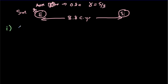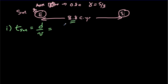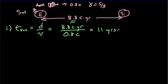Question I is to find out how much time passes between those two events for Sue. Well, that time is going to equal the distance she sees divided by the relative speed between the two. The distance here is 8.8 light years, the relative speed is 0.8c, so we're going to get 11 years for the journey as seen by Sue.